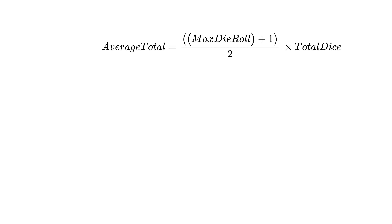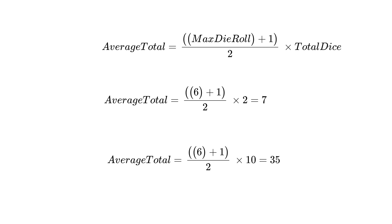But a die doesn't just have two sides, it has six sides. So you take the average between one and six, which is 3.5, and then you just multiply it by however many dice you have. That means the most probable number to get with two dice is seven, and the most probable number to get with 10 dice is 35. That's how I came up with 35 when I guessed the most probable total.